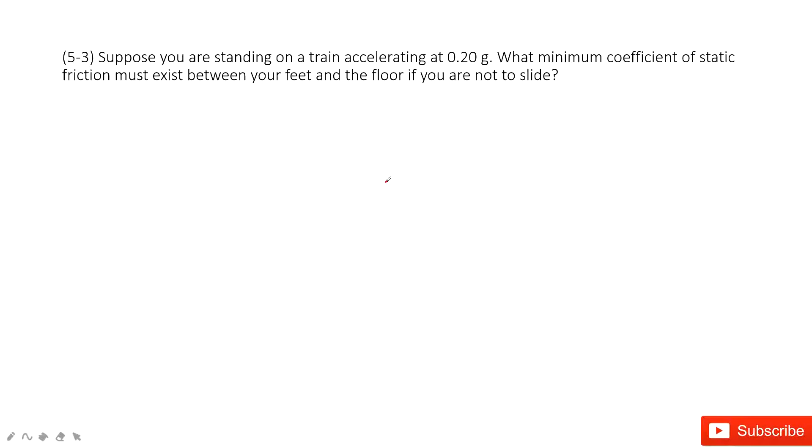So in this one, first thing we need to do the consideration. In this case, if you are in the train, you want to keep stationary with the train. That means you must have the same acceleration with the train. Yes. So you must keep the acceleration 0.2g to keep stationary with the train.